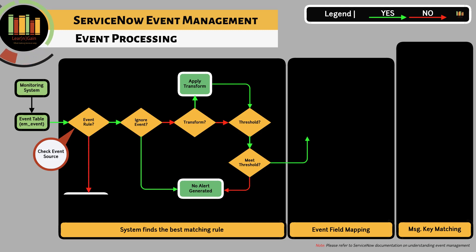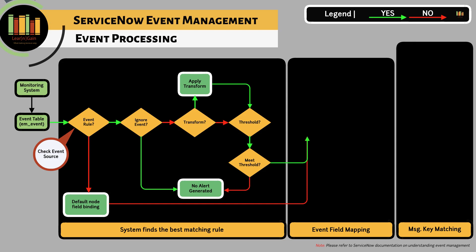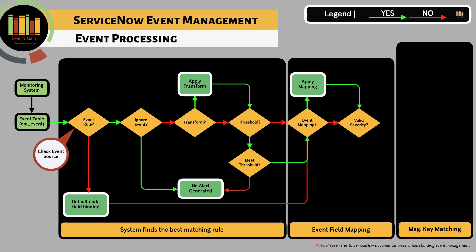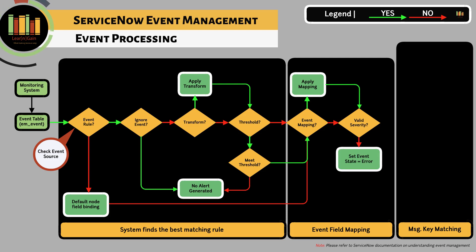If no event rules match, default binding occurs using the node information to find a matching configuration item using hostname, IP, or MAC address, and processing continues. Field mapping and severity validation occur after that. It is always recommended to bind the alert to a specific CI for root cause analysis. Note: if there is no severity defined at this point, the state of the event is set to error and alert generation does not occur.